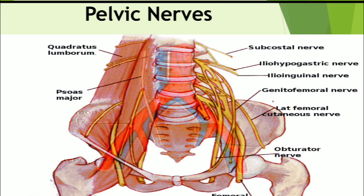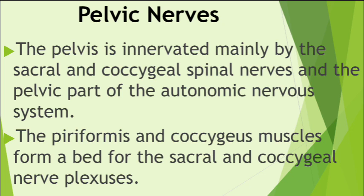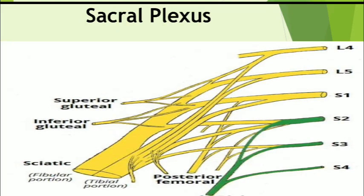At or immediately superior to the pelvic brim, the descending part of the L4 nerve — the fourth lumbar spinal nerve — unites with the anterior ramus of the L5 nerve — the fifth lumbar spinal nerve — to form the thick, cord-like lumbosacral trunk. The lumbosacral trunk passes inferiorly on the anterior surface of the ala of the sacrum and joins the sacral plexus.